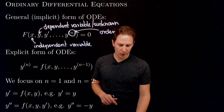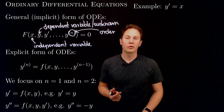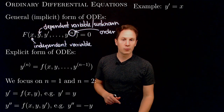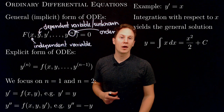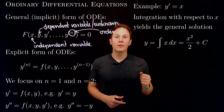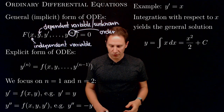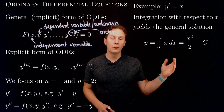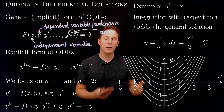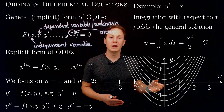Let's solve a concrete differential equation: y prime equals x. Here we are looking for a function whose derivative is x. We integrate both sides of this equation with respect to x to get y as the indefinite integral of x, that is x squared over 2 plus any constant c. This is a family of functions, all of which solve the differential equation y prime equals x. If we plot these functions, we get a family of curves — parabolas in this case — each of which is the graph of a solution.